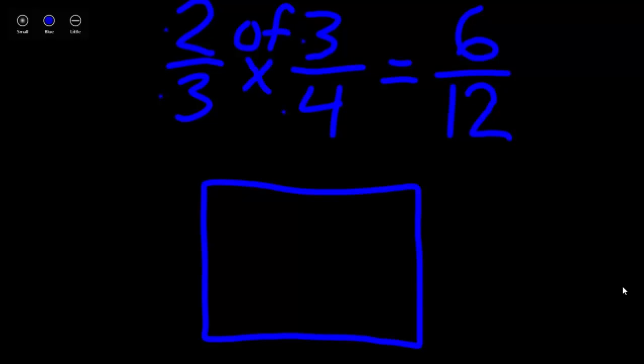First we're going to look at our first fraction, 2 thirds. We're going to separate our brownie pan into vertical sections of 3 because we're representing our denominator of 2 thirds, which is 3. That means our whole is broken into 3 equal sections. Now, since I've vertically represented these 3 sections, I'm going to vertically cross out my 3 so I know that I'm done with it.